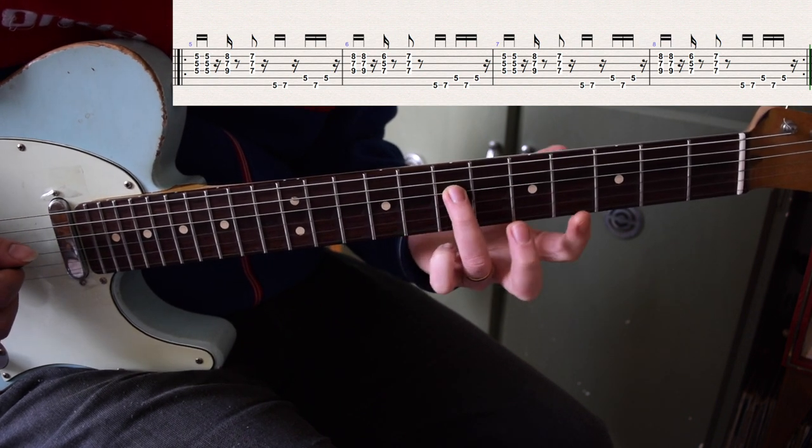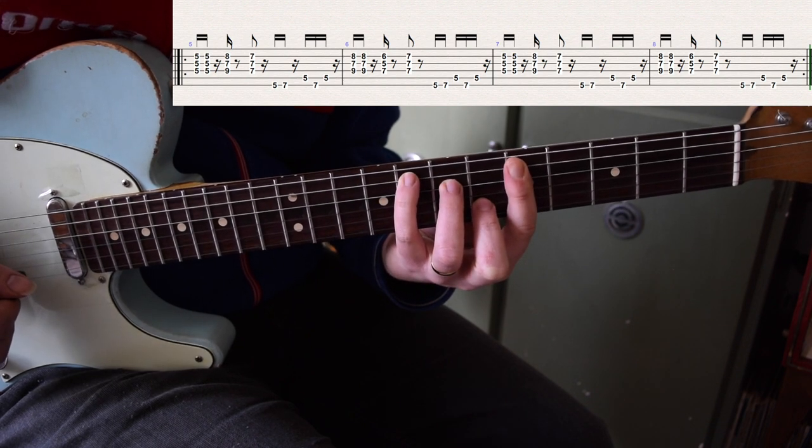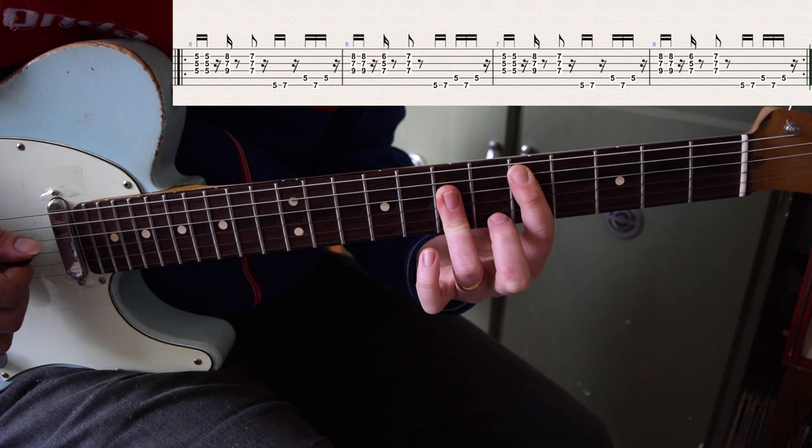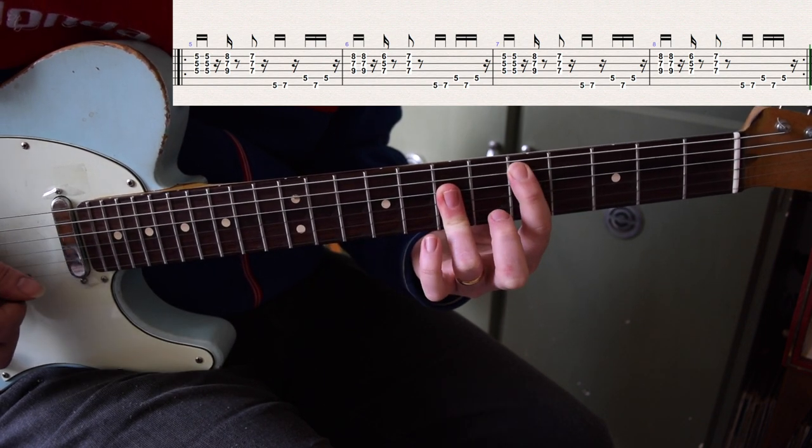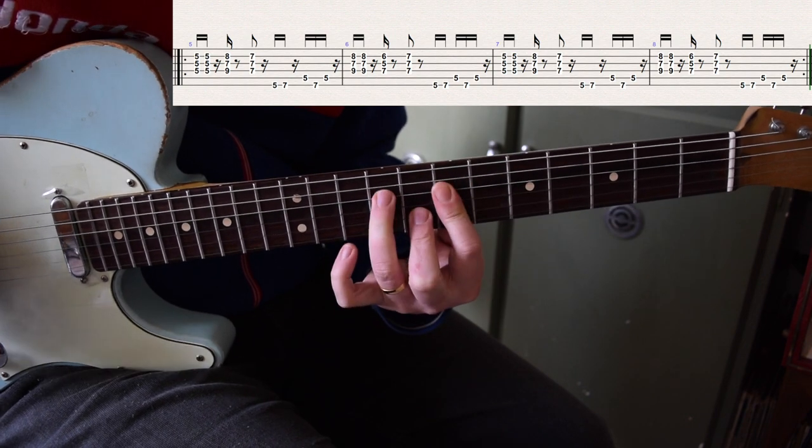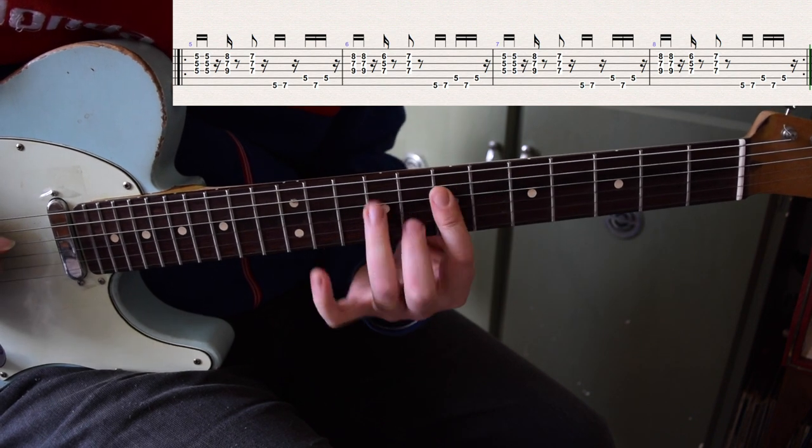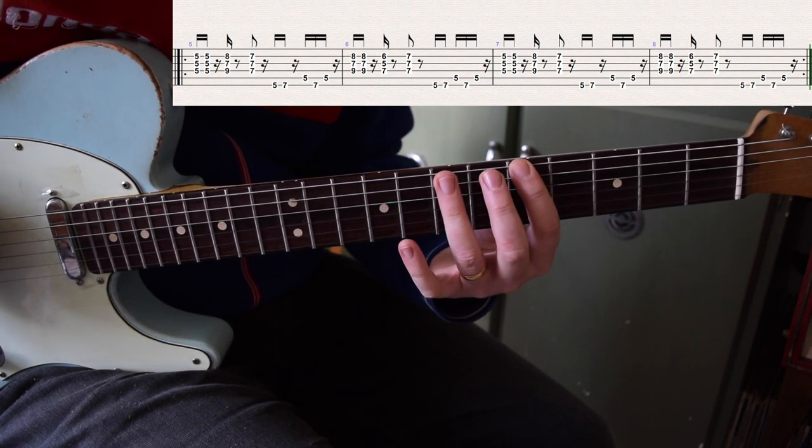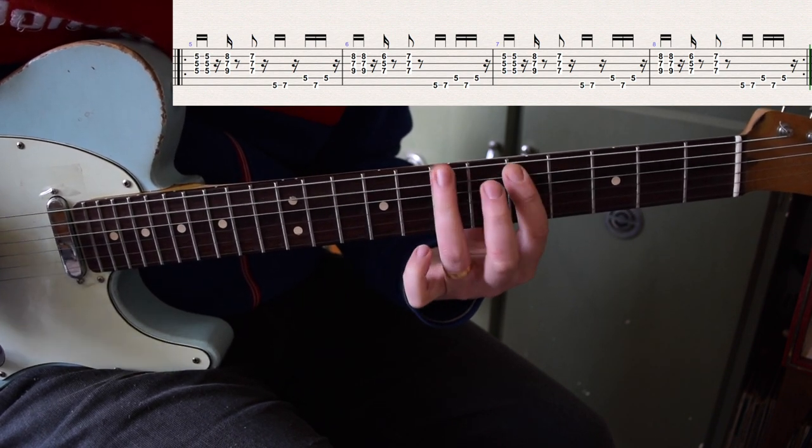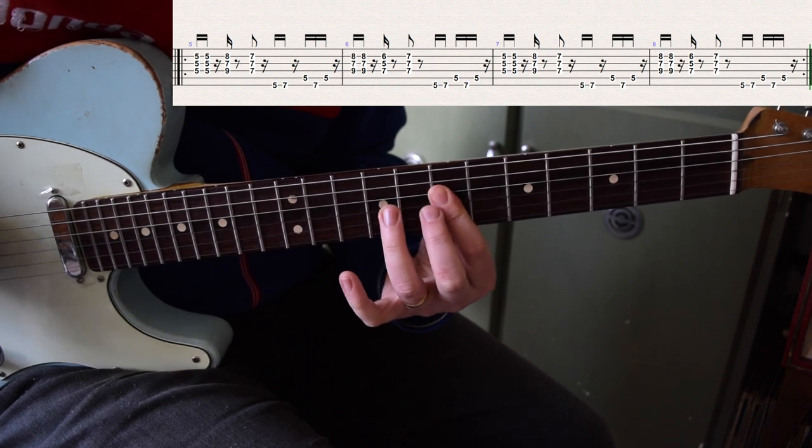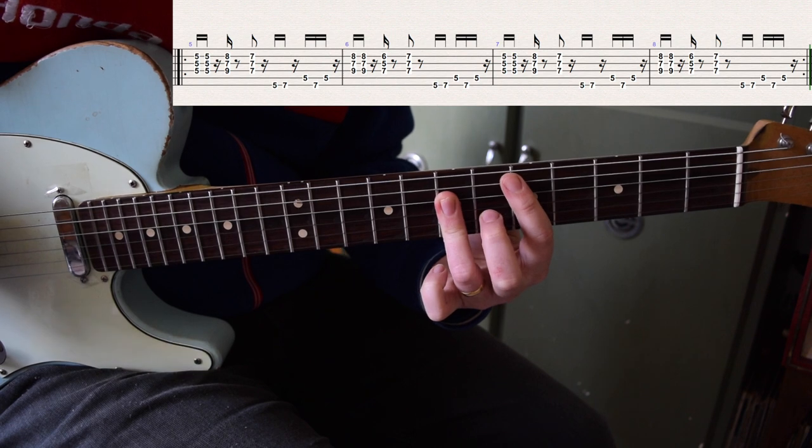Then back two frets to fret seven, five, and six which is like an F chord, an F triad, and then resolve it to fret seven across the D, G, and B strings again which is our D chord. First time, second time, slight variation, then we go back to the original key.